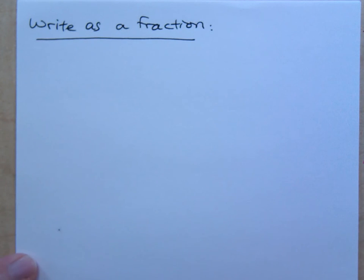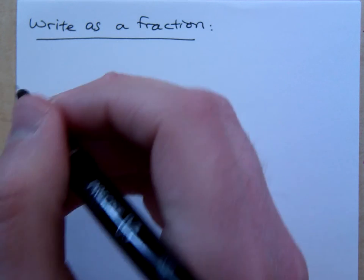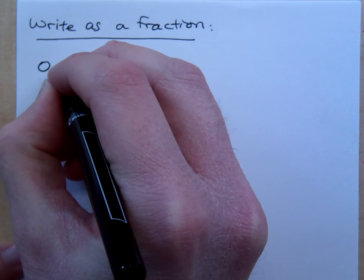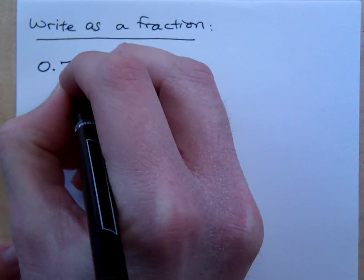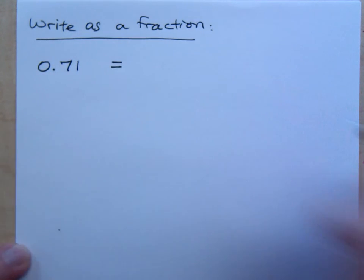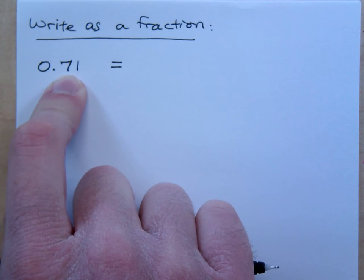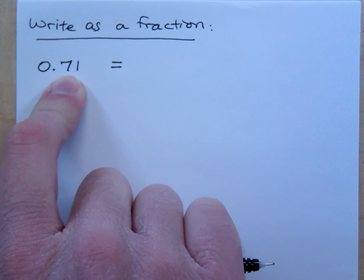Let's write some of these decimals as fractions. How would I go from this number to a fraction? The trick here is, can you read this number? If you can read this number, then you can write the fraction. How do you read this guy? Seventy-one what?